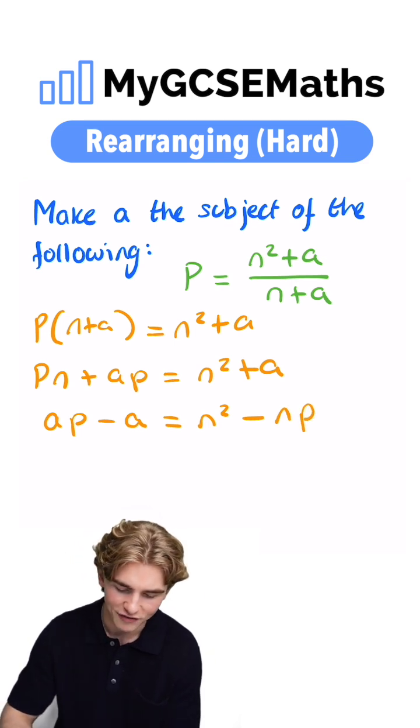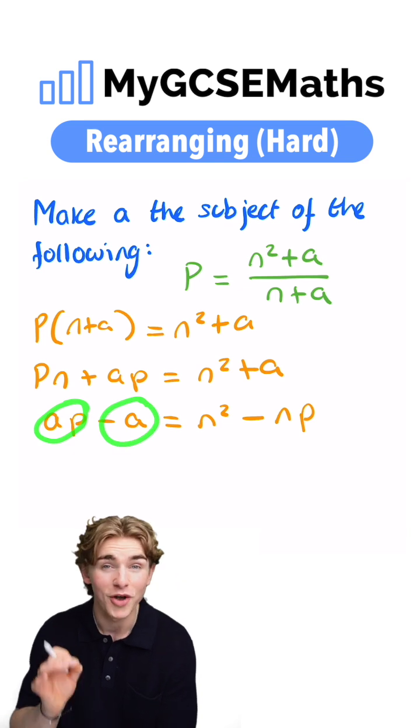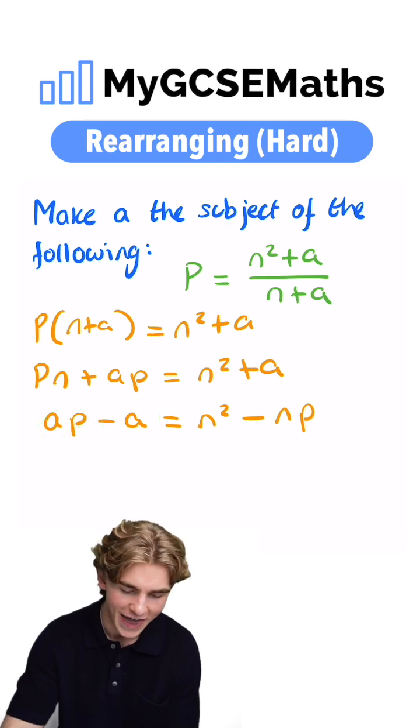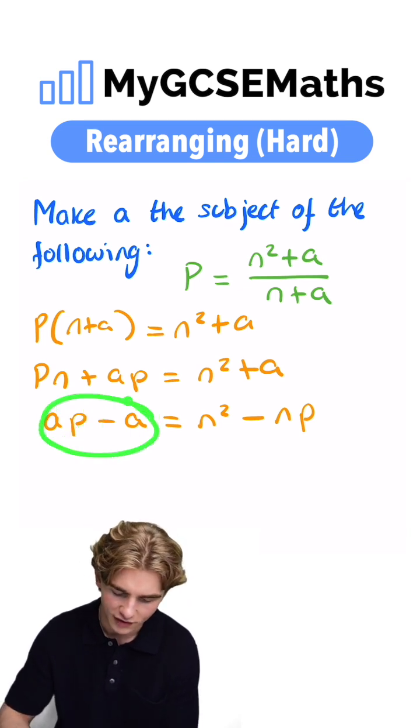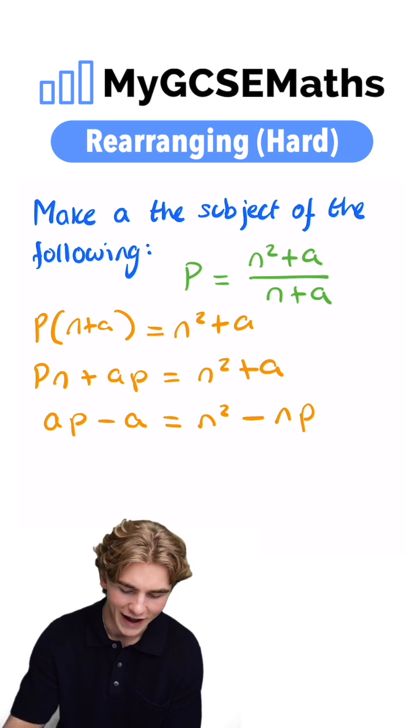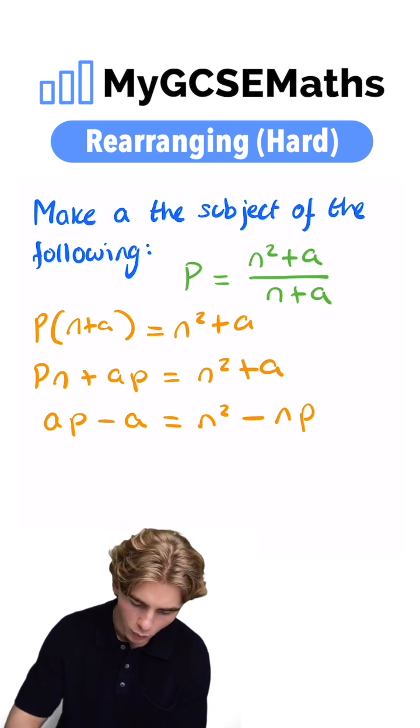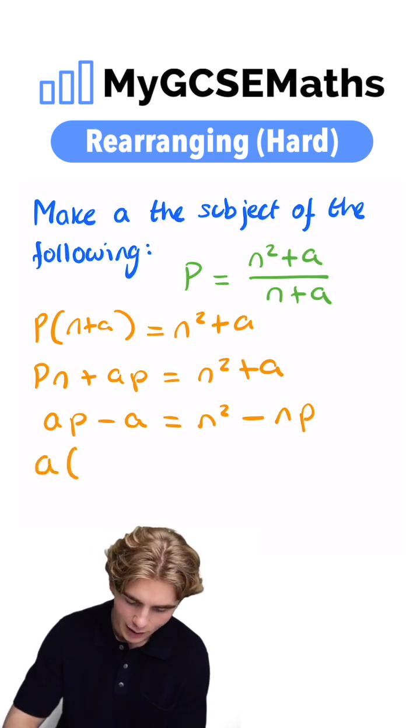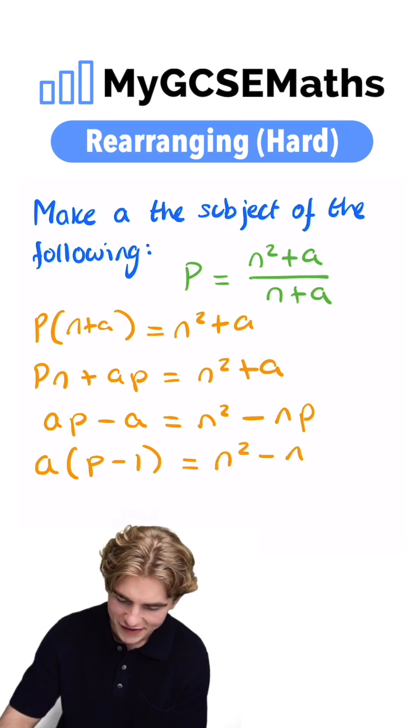Up next, what can we do? Well, we have a term in A here and a term in A here. We're going to factor out our A, and this is the part which comes up all the time, guys. We have to factor out our A. That's going to allow us to get it on its own. So we pull out a factor of A. We have A times by P minus 1 equals N squared minus NP.